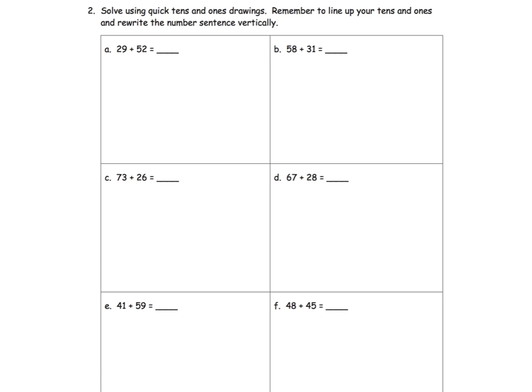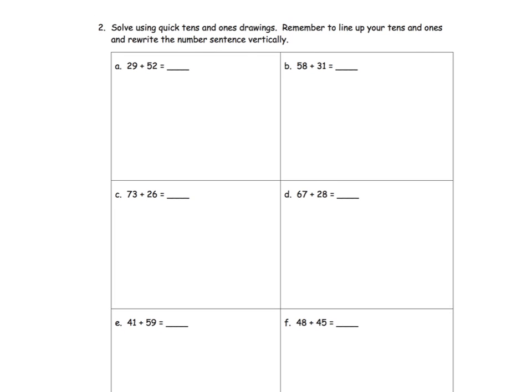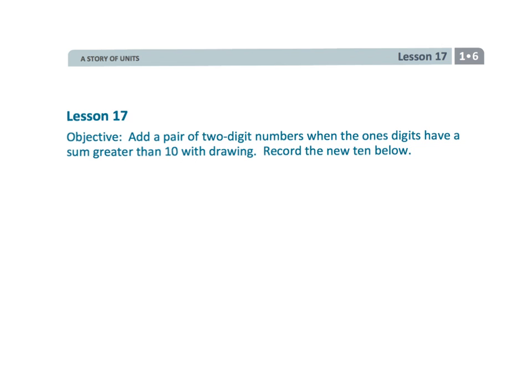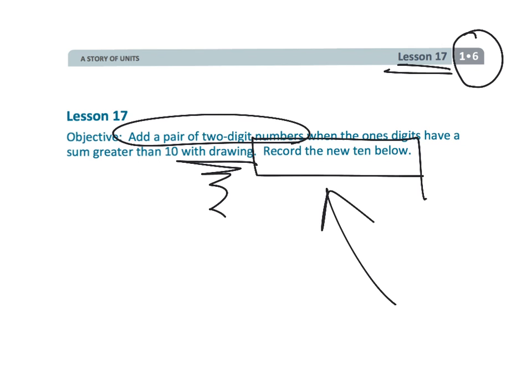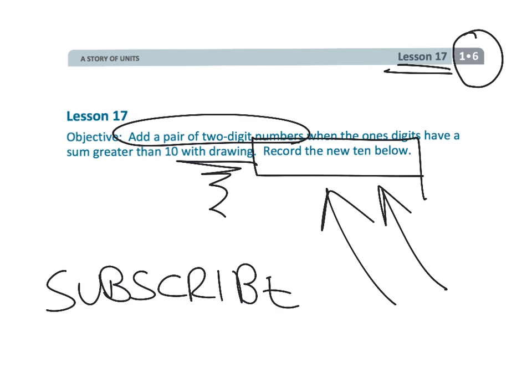This problem, this page is just more of this, this is just more of the same. The idea is using quick tens, connecting that pictorial representation to the standard algorithm. Parents and teachers, pay attention to your students. And whether they are ready to take away that training wheels and go straight to that standard algorithm. Because I'm sure by now some students are wanting to do that. And if they're ready, let them go ahead and do that. And that wraps up more of that continuing journey towards the standard algorithm. This was first grade, module 6, lesson 17. We're adding, but we're still using a drawing. But we're getting super close to having our students move straight to that standard algorithm. By the way, go ahead and subscribe to my channel. I would greatly appreciate it.